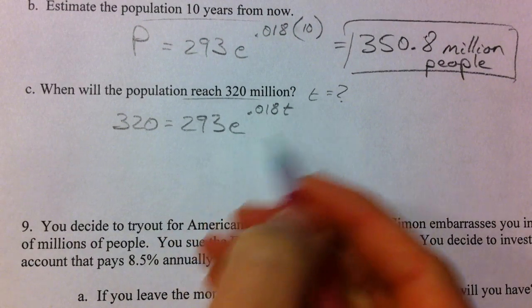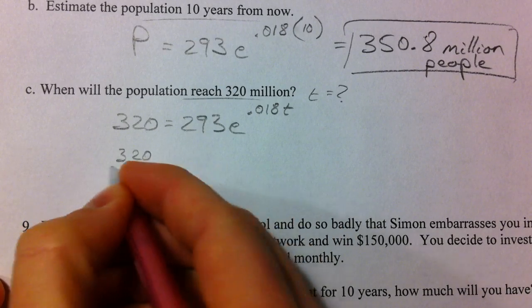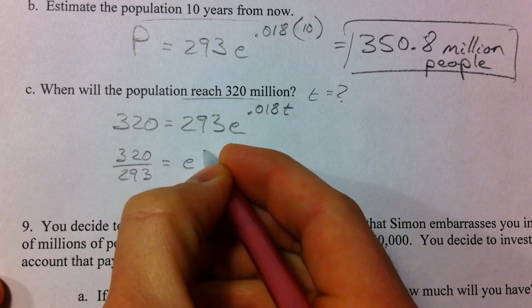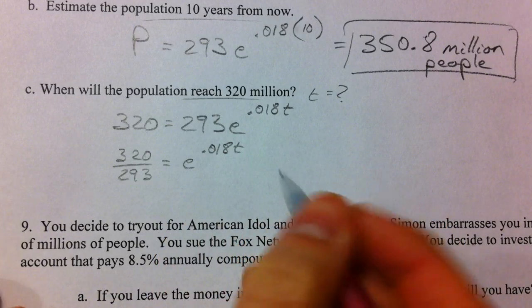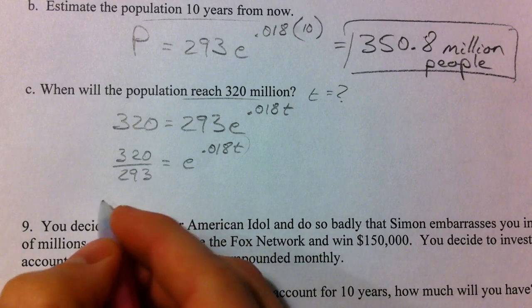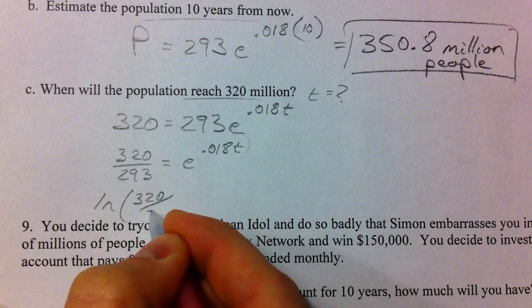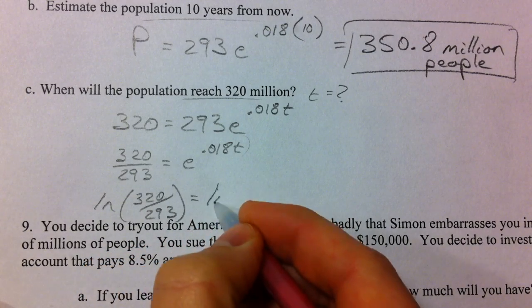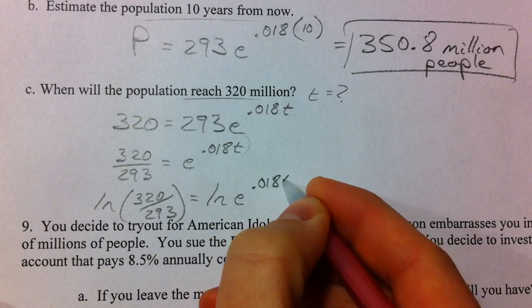So again, trying to get the T by itself, let's first get rid of the 293. So 320 divided by 293. Let's just leave that the way it is. E to the 0.018T. To get the T out of an exponential, you've got to take the log of both sides. I'm going to take the natural log because we have base E right here. 0.018T.